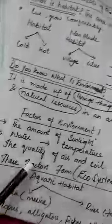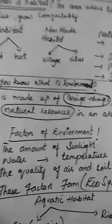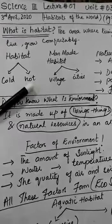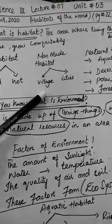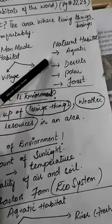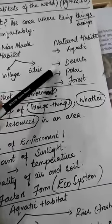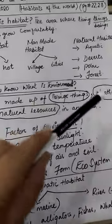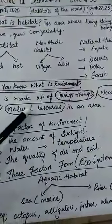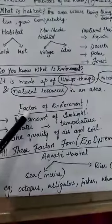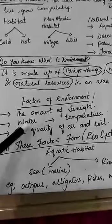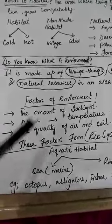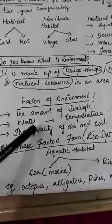This is about the aquatic habitat. Quick review: habitats can be cold or hot. Man-made habitats include villages and cities. Natural habitats include aquatic, desert, polar, and forest. Environment is made up of living things, weather, and natural resources. The factors — sunlight، water، temperature، quality of air and soil — مل کر ecosystem بناتی ہیں۔